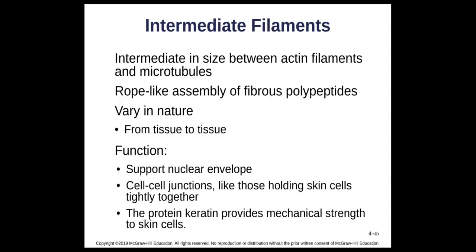Intermediate filaments are the in-between size — not as thin as actin filaments and not as large as microtubules. They have a rope-like protein structure that varies from tissue to tissue. Their functions include supporting the nuclear envelope and connecting cells to each other at cell-cell junctions, like holding skin cells tightly together. The protein keratin — found in hair, nails, and skin — provides structural strength.